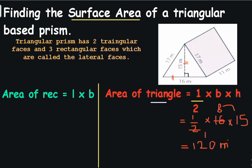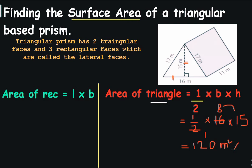So this is the area of one triangle — the area of the top triangle. Now there is one more triangle in this 3D shape, so I am going to multiply 120 square meters by 2 to find the area of 2 triangles. So 120 multiplied by 2 is going to be 240 square meters.